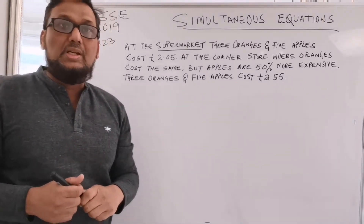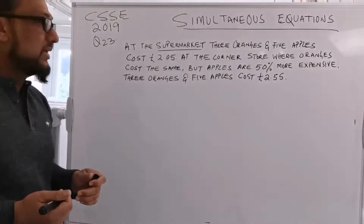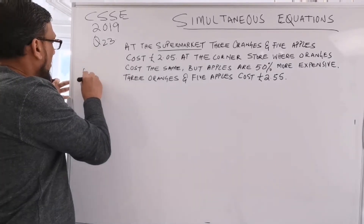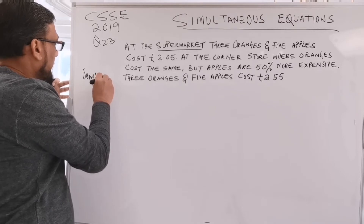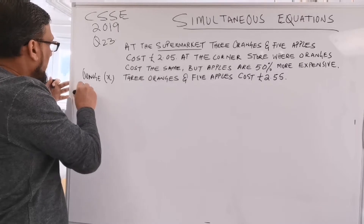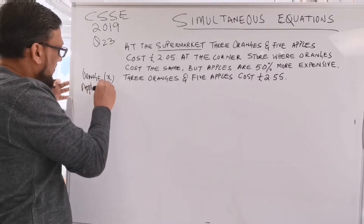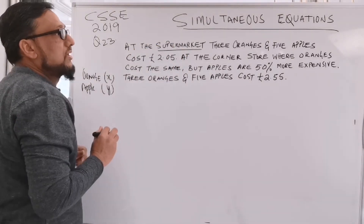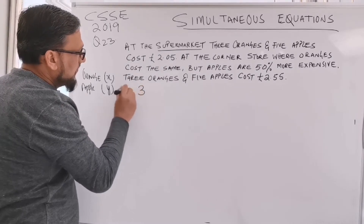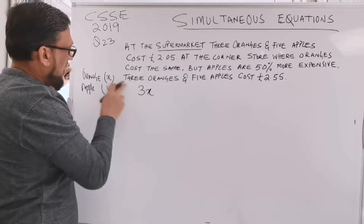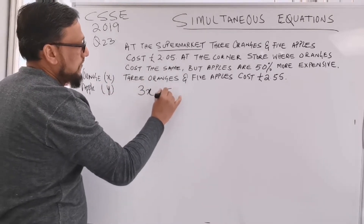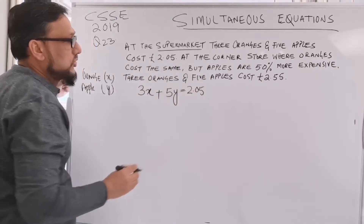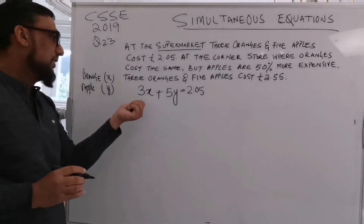So first of all we make two separate equations. I would say orange equals x and apple equals y. So as per the supermarket: three oranges is 3x and five apples is 5y, and they are offering the price of two pounds and five pence altogether.